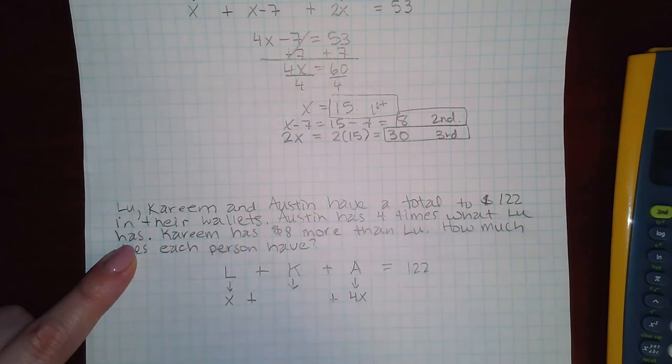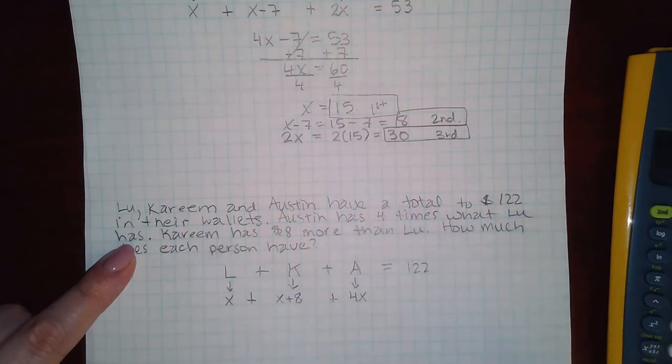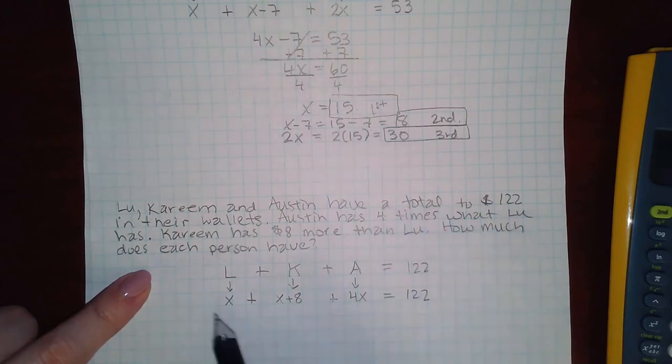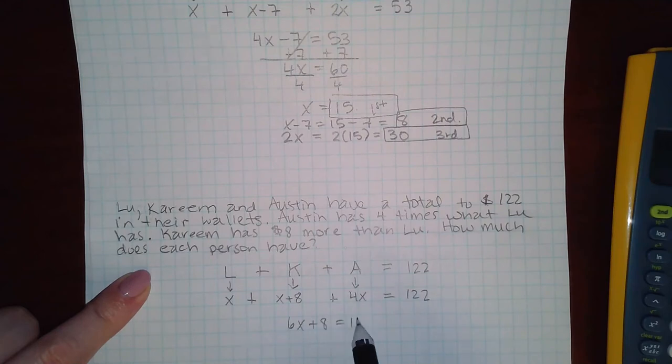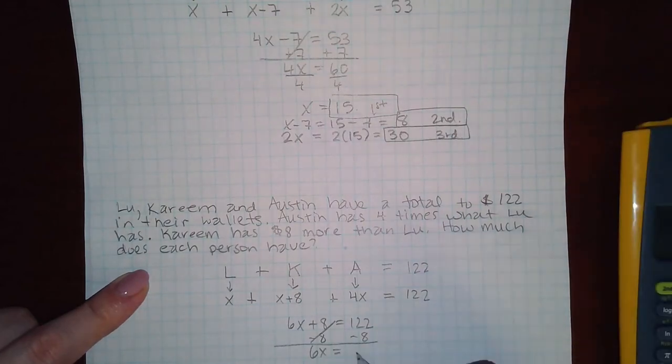Last is Kareem. Kareem has eight more than Lou, which means I'm going to take what Lou has and then add eight to it. How much does each one have? So if we combine like terms, we get 6x plus 8 equal to 122. And then if we solve for x, we have to subtract eight and then divide by six. I get x equals 19.